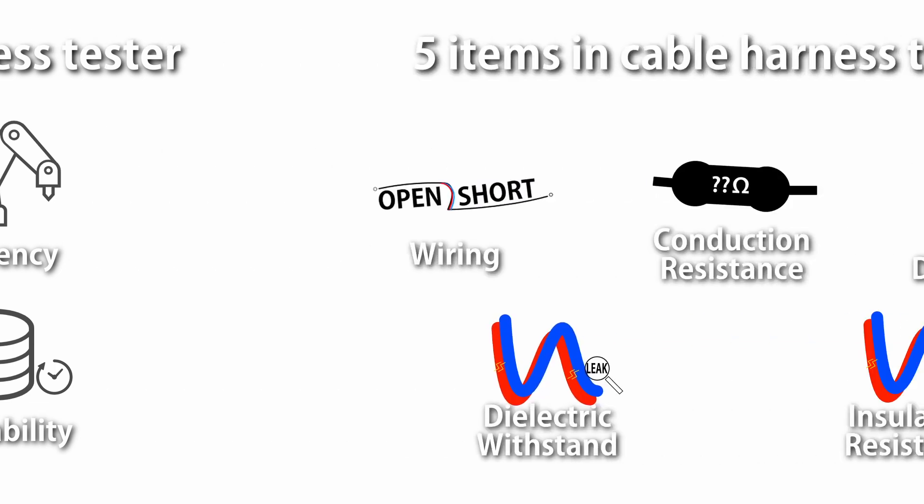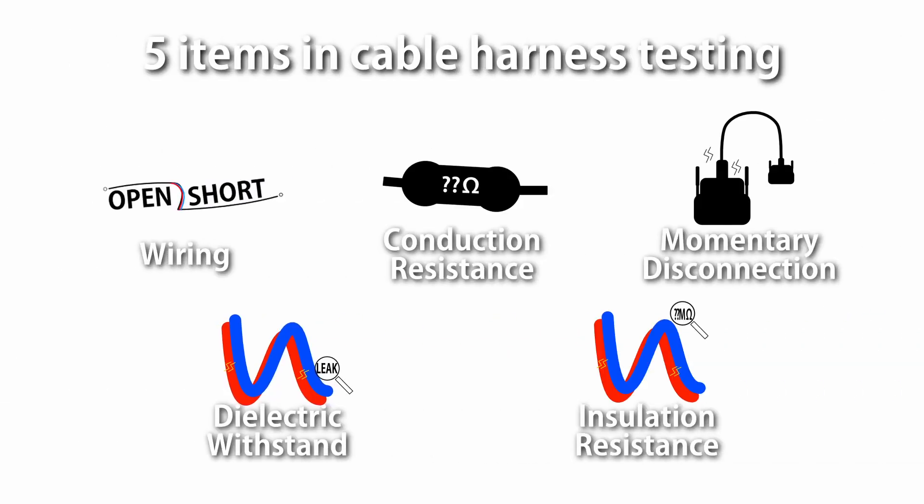There are five items in cable harness testing: wiring testing, conduction resistance testing, momentary disconnection testing, dielectric withstand testing, and insulation resistance testing.